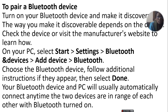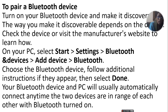On your PC, select Start > Settings > Bluetooth and devices > Add device > Bluetooth. If you go to Settings, Bluetooth and devices, you can choose which device you want to add. Choose the Bluetooth device, follow any additional instructions if they appear, and then select Done.